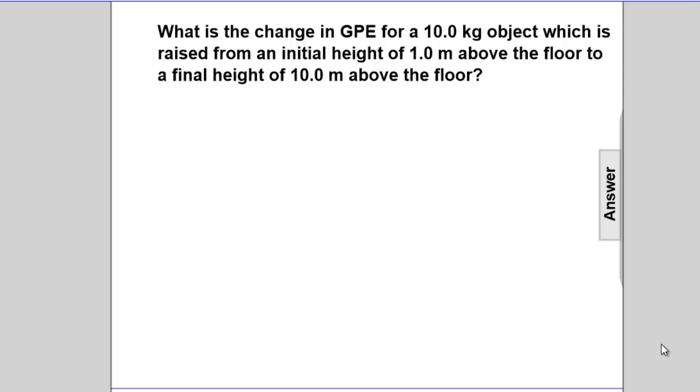What is the change in GPE, Gravitational Potential Energy, for a 10 kilogram object which is raised from an initial height of one meter above the floor to a final height of 10 meters above the floor?